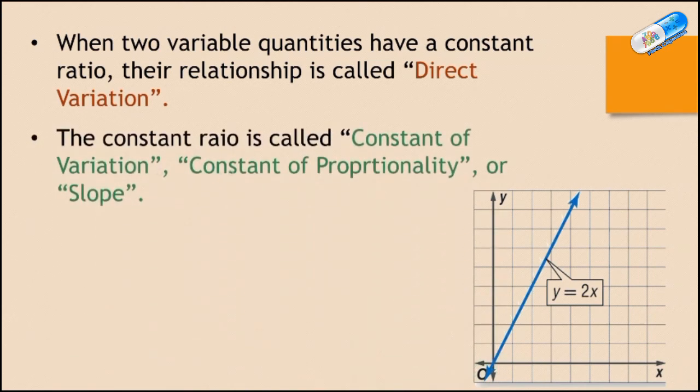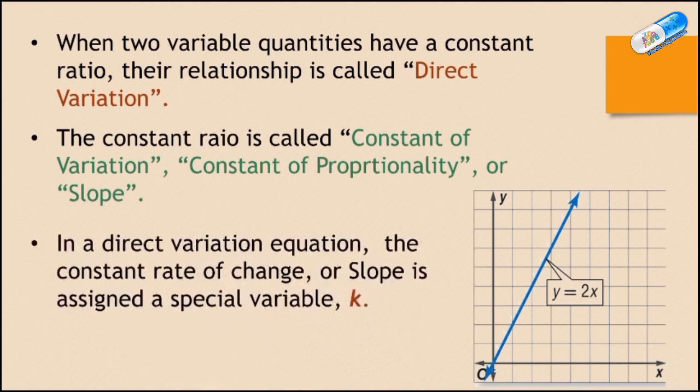The constant ratio is called constant of variation, or constant of proportionality, or it's the slope at the same time. In a direct variation equation, the constant rate of change, or slope, is assigned a special variable k.